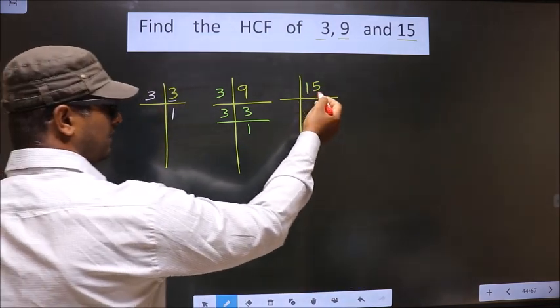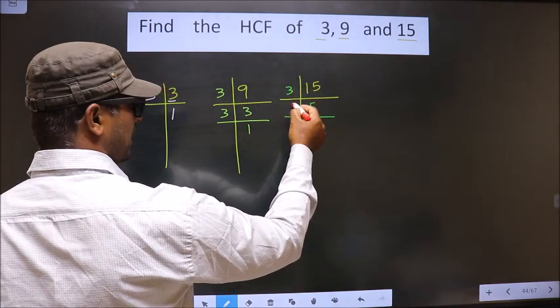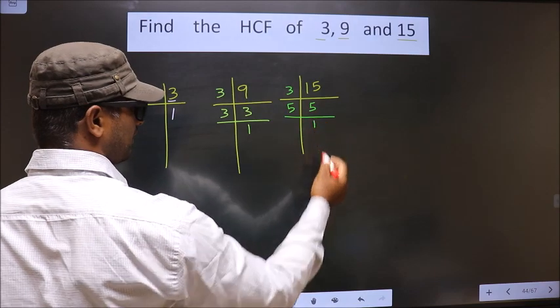Now, here we have 15. 15 is nothing but 3 times 5. Now, 5 is a prime number, so we take 5 and 1.